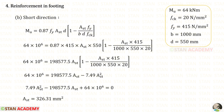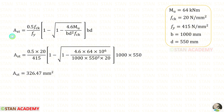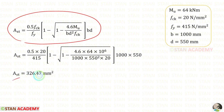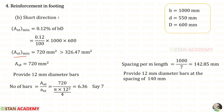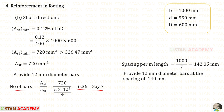Now for the short direction: the moment is 64 kN·m/m. Using the same formula, the calculated AST is less than the minimum of 720 mm², so we proceed with 720 mm². Providing 12 mm diameter bars, the number per metre = 6.36 ≈ 7, giving a spacing of 142.85 mm, rounded to 140 mm. Provide 12 mm diameter bars at 140 mm spacing.